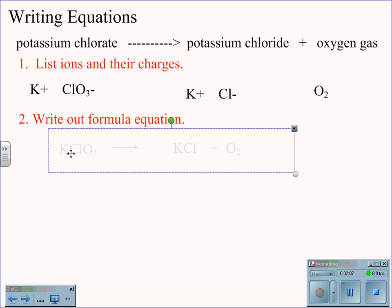We write out the formula equation. KClO3, potassium and chlorate go together in a one-to-one ratio, plus one to minus one. Potassium chloride is KCl, one-to-one ratio, plus one to minus one.